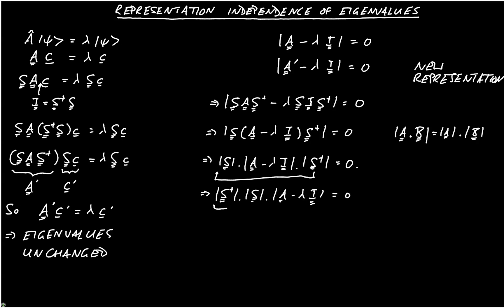This, on the left-hand side, can be written as the determinant of S dagger S, which is just 1, because it's the determinant of the identity matrix.